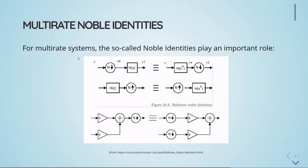For multi-rate systems, the so-called Noble identities play a very important role. Here we have the Noble identities, with this section for downsampling and this section for upsampling.